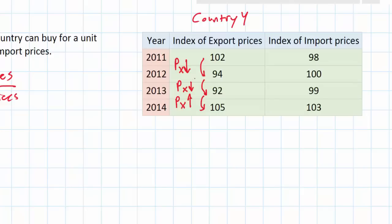Later in this lesson we'll talk about different reasons that a country's export prices might increase or decrease over time. In the column on the right we have import prices. The numbers represent how the price of a basket of goods that this country is importing have changed over time. Between 2011 and 2012 the price of imports increased, but between 2012 and 2013 import prices fell, and then between 2013 and 2014 the prices of imports rose once again.